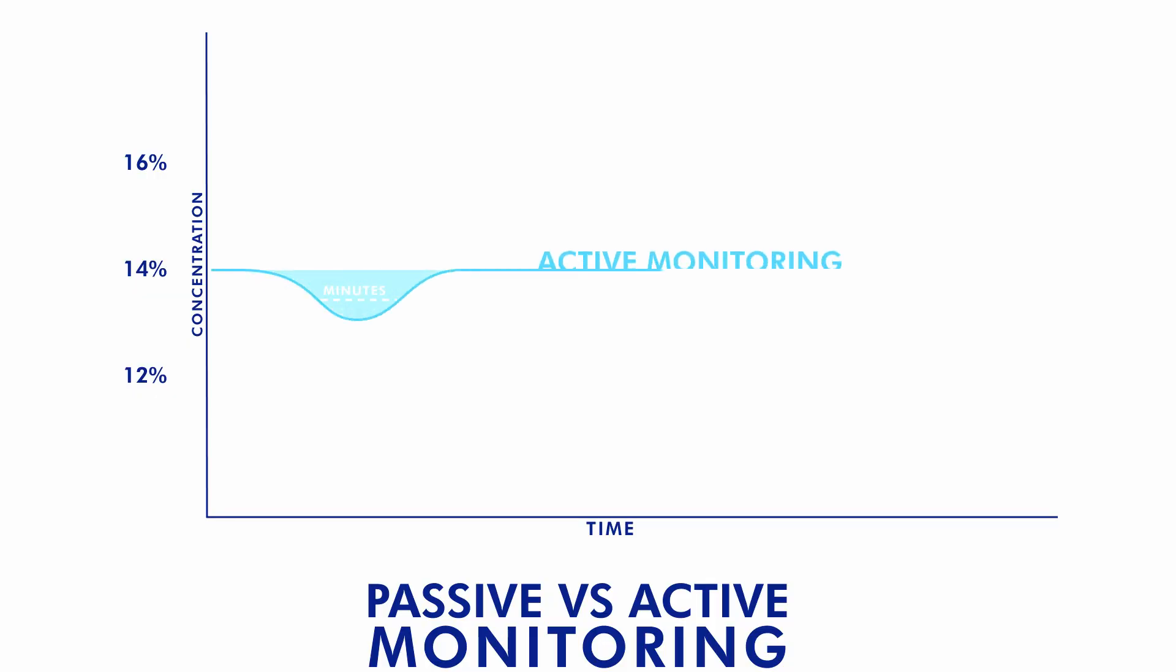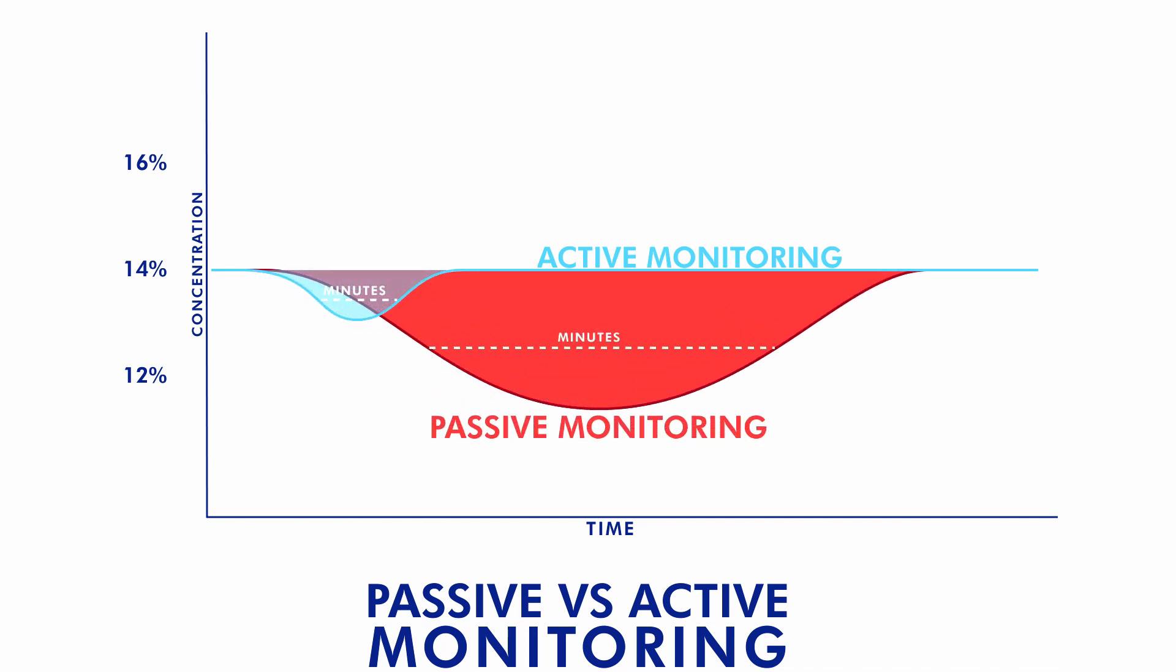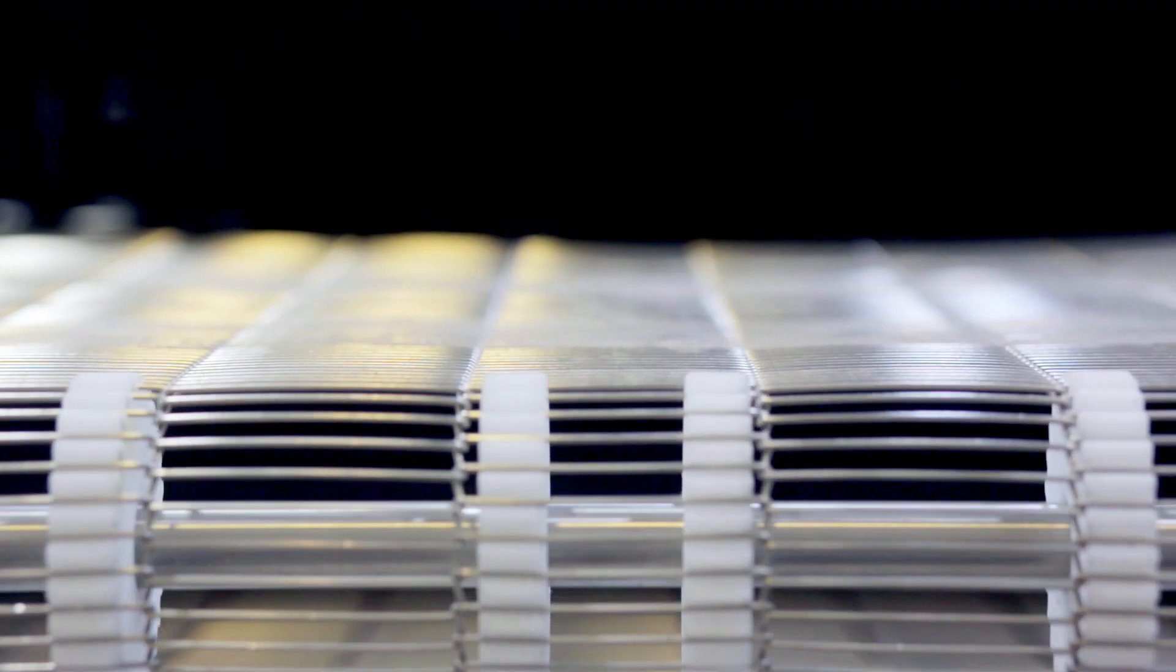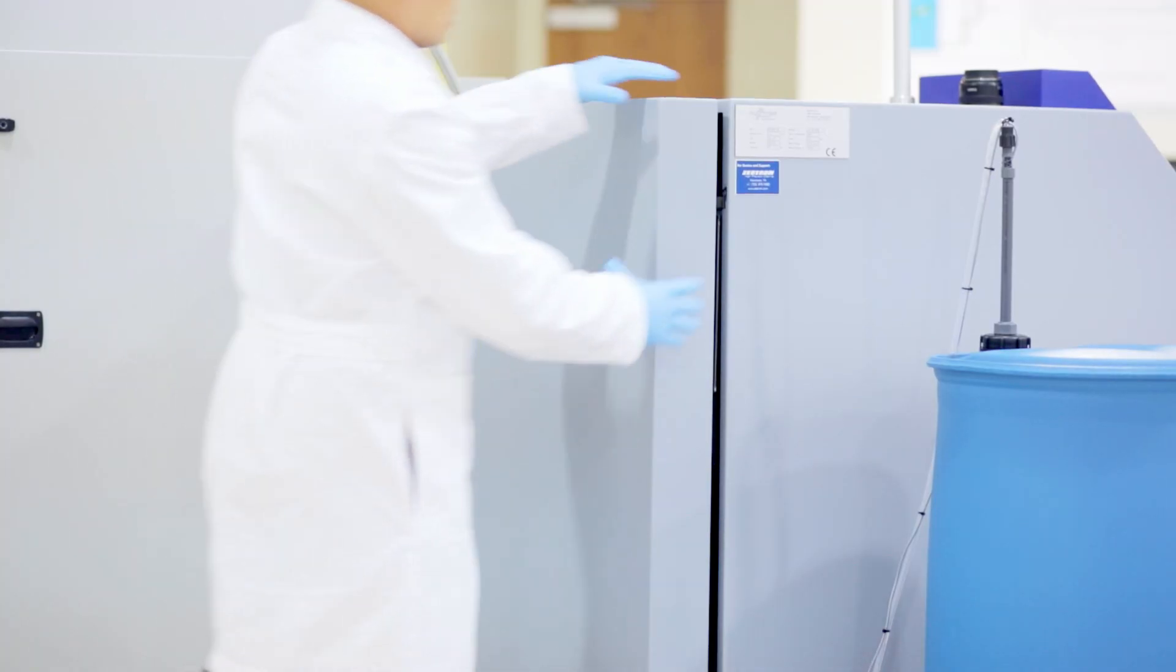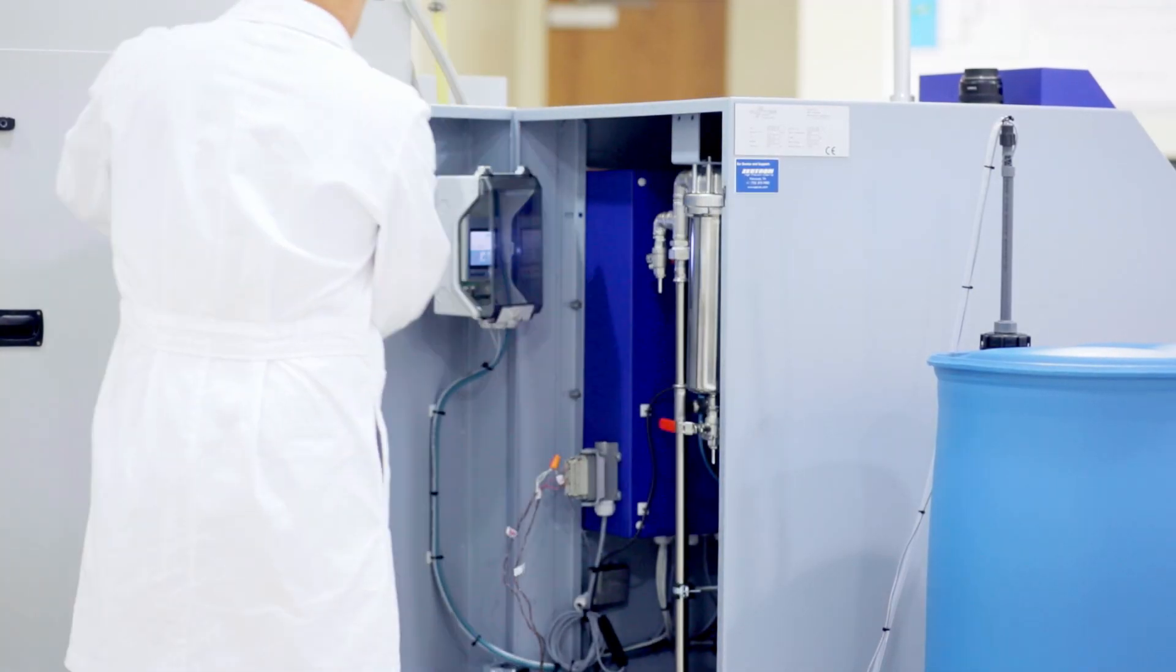With passive monitoring, an operator has to visually see this concentration drop, then react to it, costing both time and revenue from reduced throughput. Using Zestron's 3P technology...